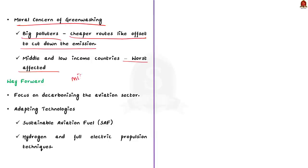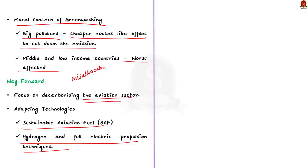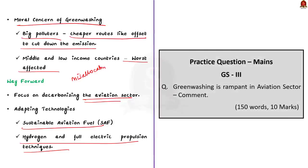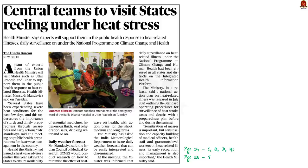What is the way forward? Airlines should focus on decarbonizing the aviation sector by adopting technologies like sustainable aviation fuel, hydrogen, and full electric propulsion techniques. We should also keep in mind that air traffic will shoot up soon, but the process of developing decarbonizing technology may take some time. Now we will take up the next article for our discussion.